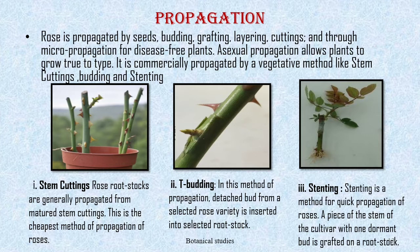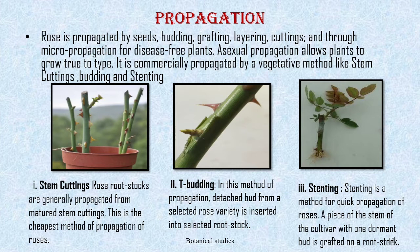T-budding: in this method of propagation, a detached bud from the selected rose variety is inserted into selected rootstocks. T-budding is the most widely accepted method for propagating ornamental rose plants. The cambium layer — the growing layer found between the wood and bark of the shoot — is key; the success of budding mainly depends upon joining the cambium of the rootstock and that of the bud. Stenting: stenting is a method for quick propagation of roses. A piece of the stem of the cultivar with one dormant bud is grafted onto a rootstock; bud or graft union formation and adventitious root formation occur simultaneously, resulting in a complete plant in 2 to 3 months.